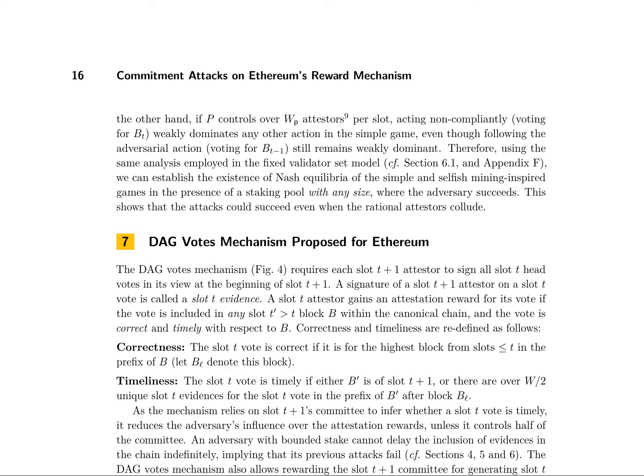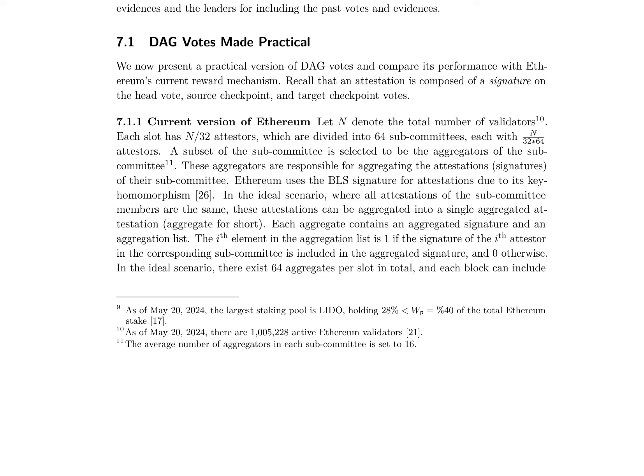In this mechanism, each slot T+1 attester signs all slot T head votes in its view at the beginning of slot T+1, with a signature of a slot T+1 attester on a slot T vote called a slot evidence. A slot T attester gains an attestation reward for its vote if the vote is included in any slot T′ > T block B within the canonical chain, and the vote is correct and timely with respect to B. The DAG votes mechanism reduces the adversary's influence over the attestation rewards, unless it controls half of the committee, and allows rewarding the slot T+1 committee for generating slot T evidences and the leaders for including the past votes and evidences.